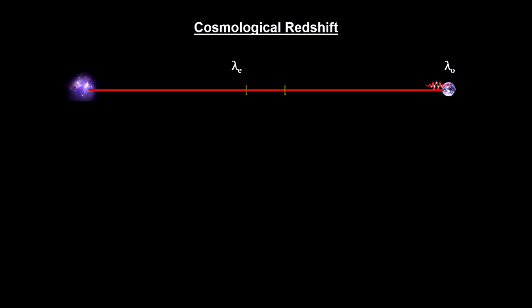We define redshift Z as the difference between the two divided by the wavelength emitted. In this hypothetical example, we have an object with a redshift equal to 6.